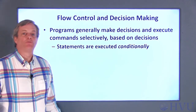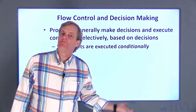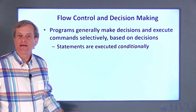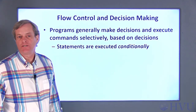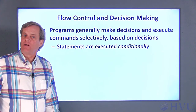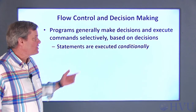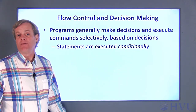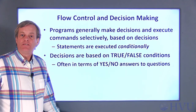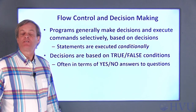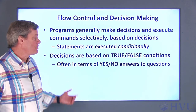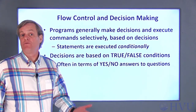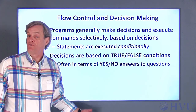Most computer programs will need to make decisions and selectively execute commands based on those decisions. This is called flow control — the flow of calculations through the program is controlled by the decisions being made. The other terminology relative to this process is that commands are executed conditionally. Some condition or set of conditions must be met before a given command is executed. The types of decisions made by most computer programs are the result of simple true or false conditions, or questions whose answers are either yes or no. So the general decision being made is: if this is true, then do this one thing, but if it isn't true, do something else.